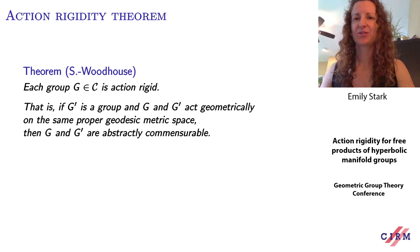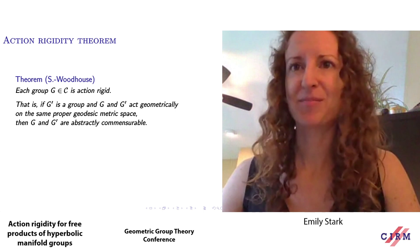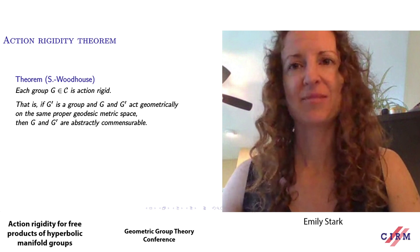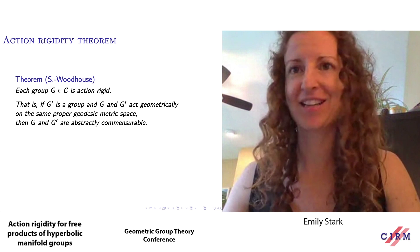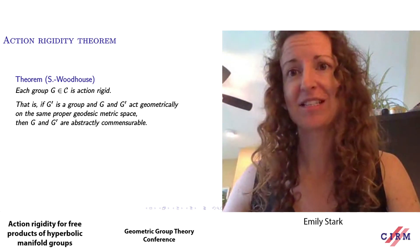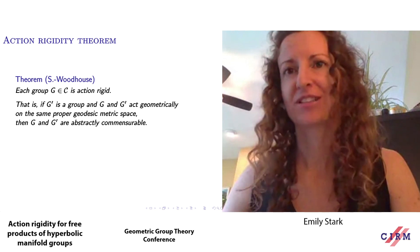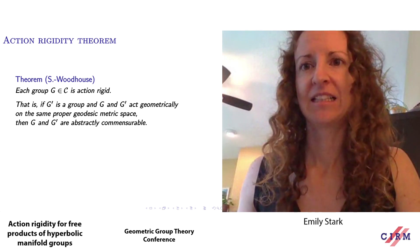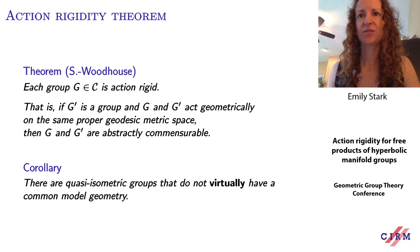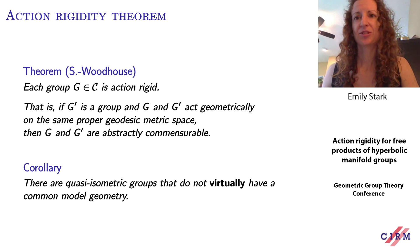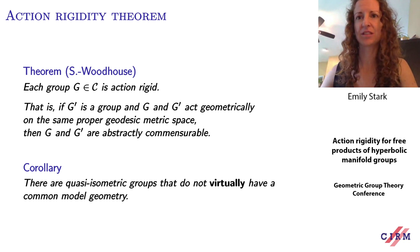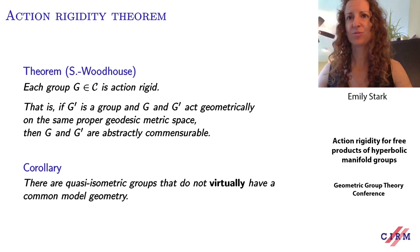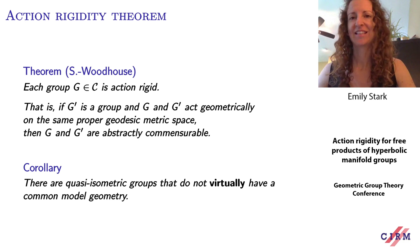However, we prove that there is rigidity if you require these groups to actually act on the same space. We show that every free product of closed hyperbolic manifold groups is action-rigid: if G prime is a group and G and G prime act geometrically on the same proper geodesic metric space, then G and G prime are abstractly commensurable. As a consequence, we have the first examples of quasi-isometric groups that do not virtually have a common model geometry — this obstruction can't disappear after passing to finite index subgroups. This corollary follows because this class of groups is closed under passing to finite index subgroups, so for these groups the converse to the Milnor-Schwartz lemma fails in a really big way.